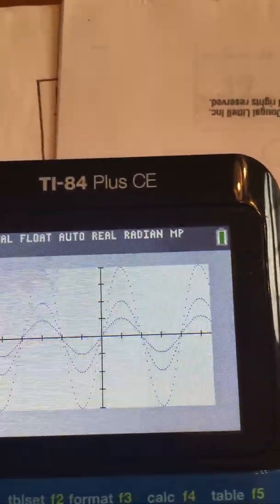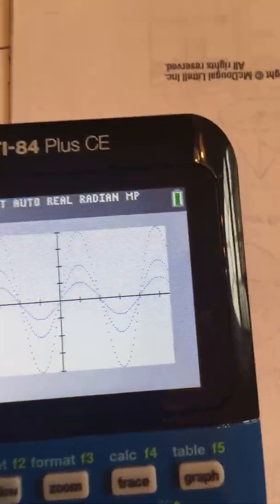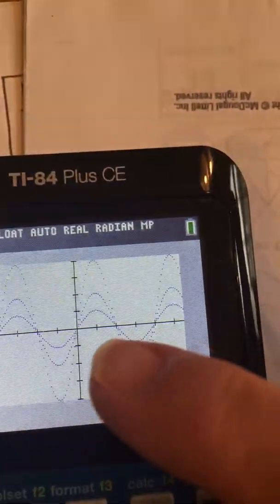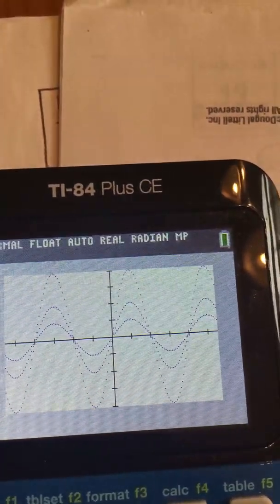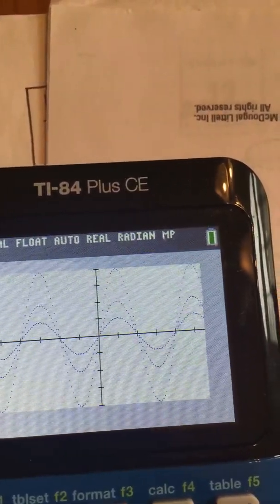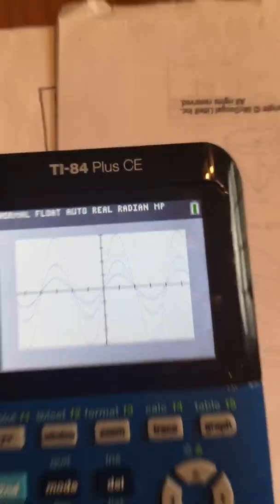So we graphed some trigonomic functions, and we saw that when you increase the value of a, the little waves get bigger. The amplitude increases. All right? So that's pretty fun. Fancy math. Pretty fun there.